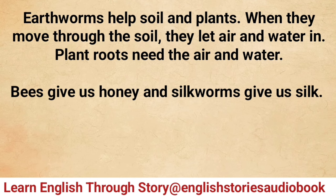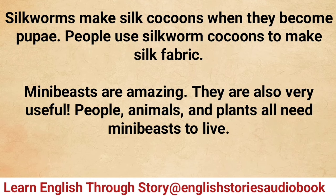Earthworms help soil and plants — when they move through the soil, they let air and water in, and plant roots need the air and water. Bees give us honey and silkworms give us silk. Silkworms make silk cocoons when they become pupae, and people use silkworm cocoons to make silk fabric.